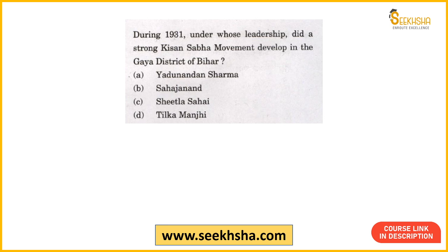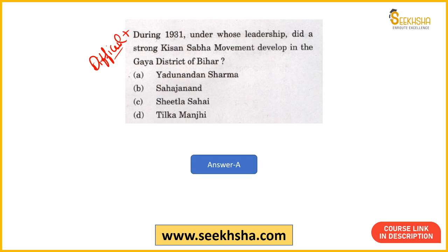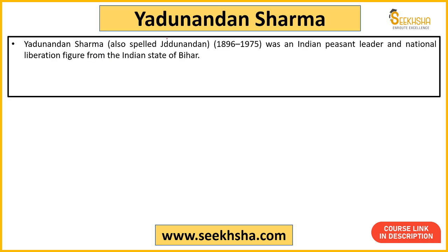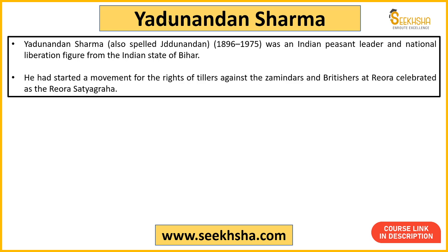Next question: During 1931, under whose leadership did a strong Kisan Sabha movement develop in the Gaya district of Bihar? This is a difficult question — not easily found in NCRT, and not in every book. This type of question is typically asked in state PCS exams like Bihar PCS. The right answer is Yadunandan Sharma — he was a peasant leader and national liberation figure from Bihar who started a movement against zamindars and the British in Gaya, known as the Rewara Satyagraha.